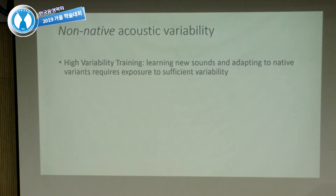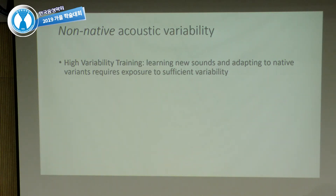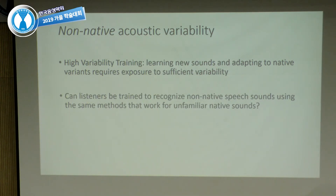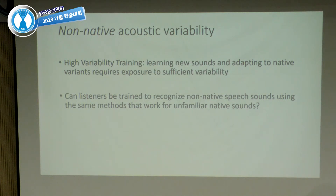We then asked a different question. The whole idea of high variability training is that learning sounds and adapting to native variants requires exposure to sufficient variability. We turned things around and asked: can listeners be trained to recognize non-native speech sounds using the same methods that work for unfamiliar native sounds? Our Mandarin tone stimuli were always spoken by native speakers, but now we're looking at whether English listeners can get better at identifying foreign-accented English speech sounds — going in the other direction.